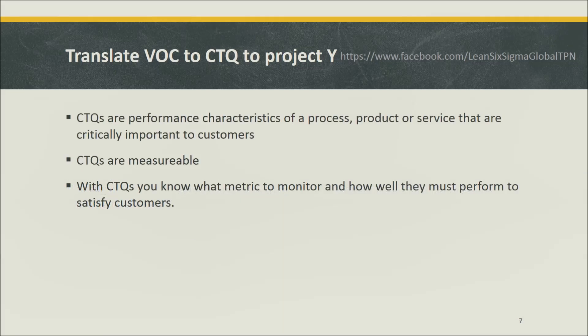To recap: CTQs are performance characteristics of a process, product, or service that are critically important to customers. CTQs are measurable, and we can specify how good they need to be in order to satisfy the needs and expectations of customers.